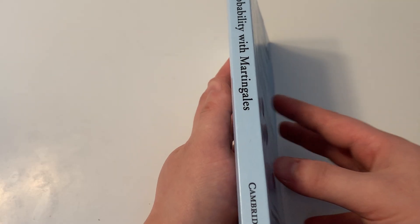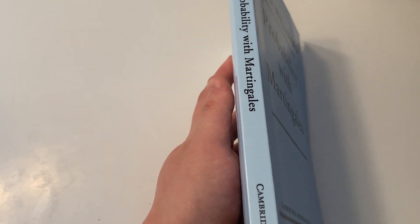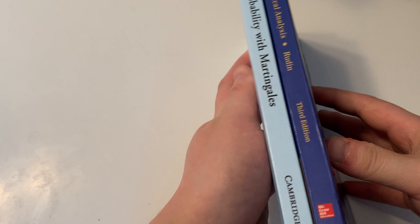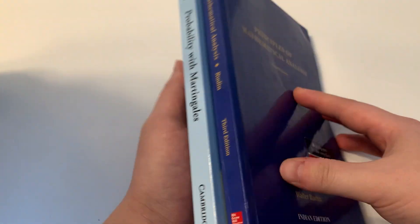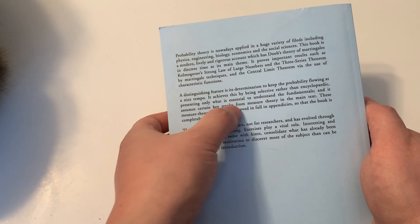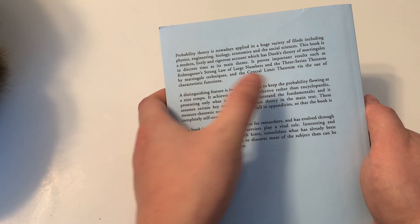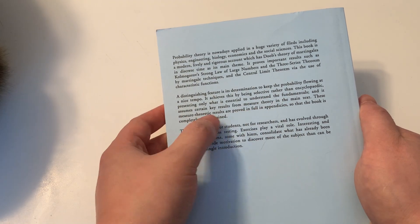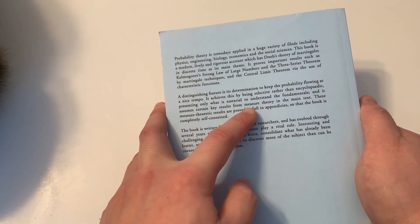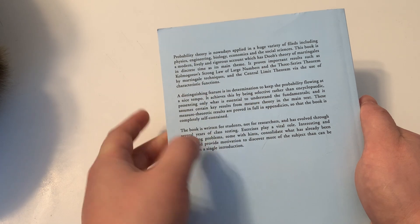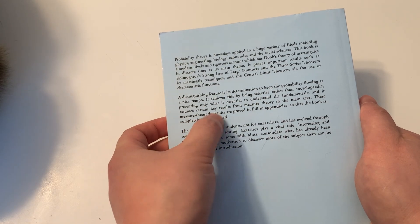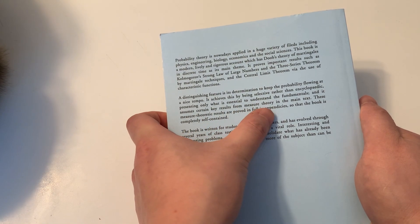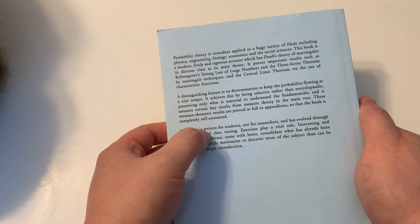This is not a very thick book. Let me just use Baby Rudin as a comparison. As you can see, they're about the same thickness. As it is said on the back cover, the book is selective rather than encyclopedic. And it assumes certain key results from measure theory in the main text. These measure theoretic results are proved in full in appendices so that book is completely self-contained.